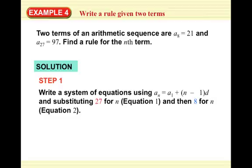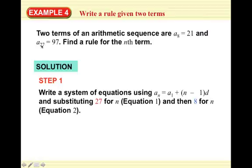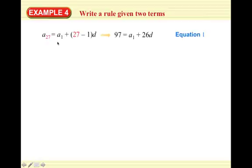We'll write a system of equations using each piece of information. Using A_N equals A1 plus (N minus 1) times D: for equation 1, substitute 27 for N — the 27th term equals A1 plus 26 times D. We know A27 is 97, so equation 1 is: 97 equals A1 plus 26D.